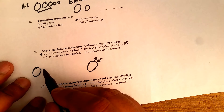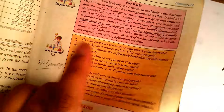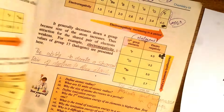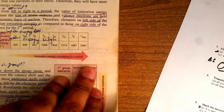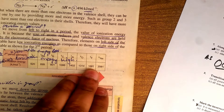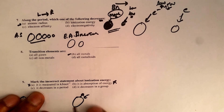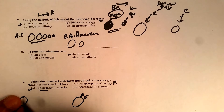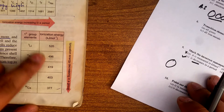They are asking which statement is incorrect about ionization energy. If you look at a period, ionization energy is actually increasing — so the statement that 'it decreases in a period' is incorrect. That is your answer. However, 'it decreases in a group' is a correct statement, so that is confirmed.